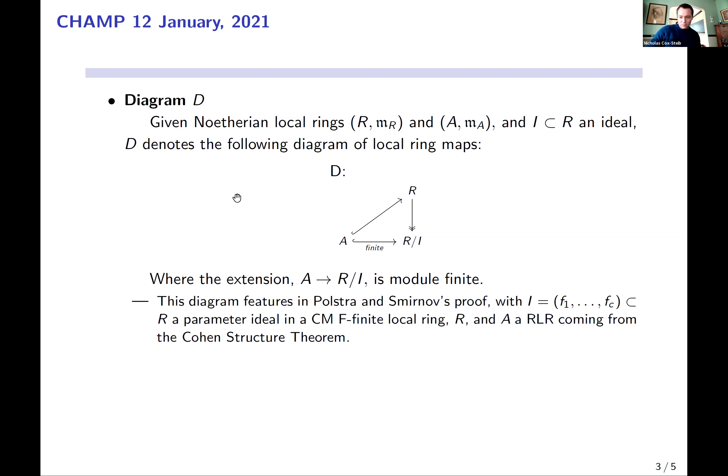There's this diagram of local rings that appears in the original proof of Thomas and Ilya. And I use it so much in my work that I've given it a special name, called it Diagram D. But this diagram consists of local rings R, A, and R mod I, where I is an ideal in R. And the diagram is really just a finite extension, A into R mod I, that lifts.